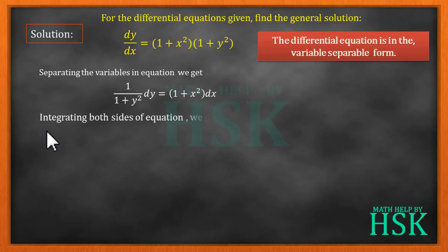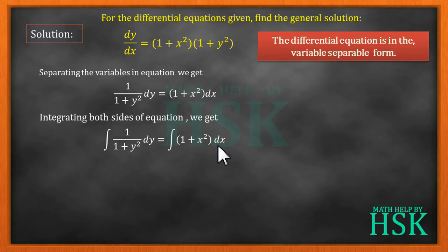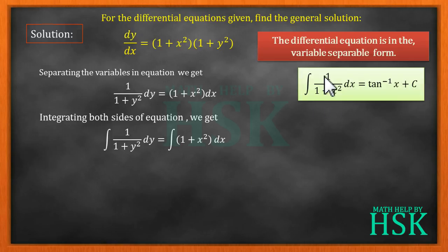Next, integrating both sides of the equation we get: integration of 1 by (1 plus y squared) dy is equal to integration of (1 plus x squared) dx. We know that the formula for integration of 1 by (1 plus x squared) dx is tan inverse of x.